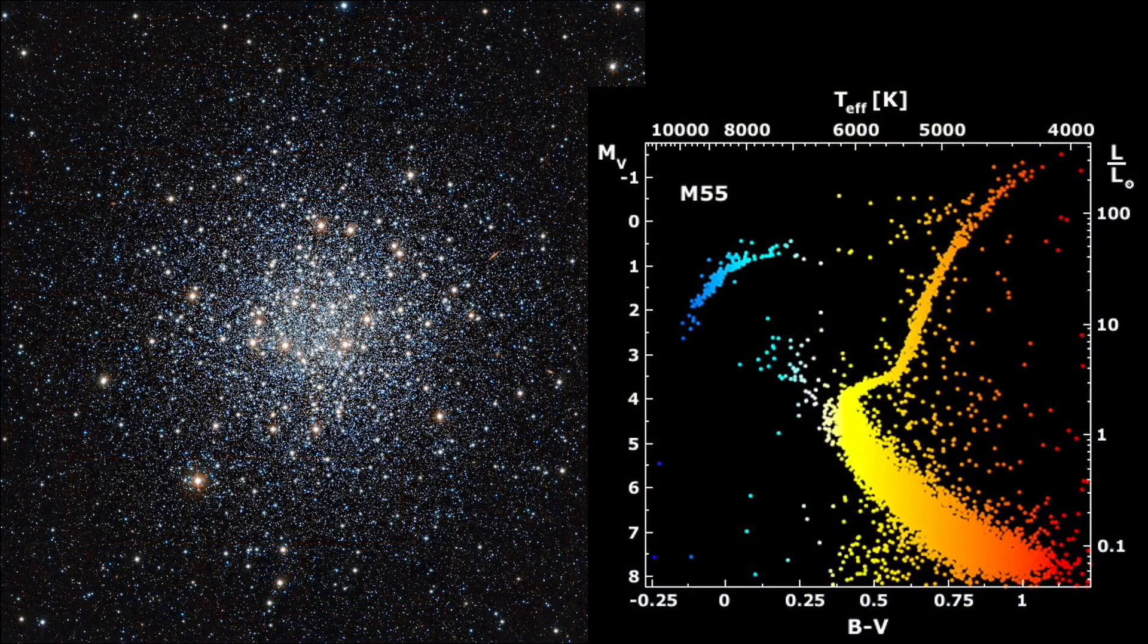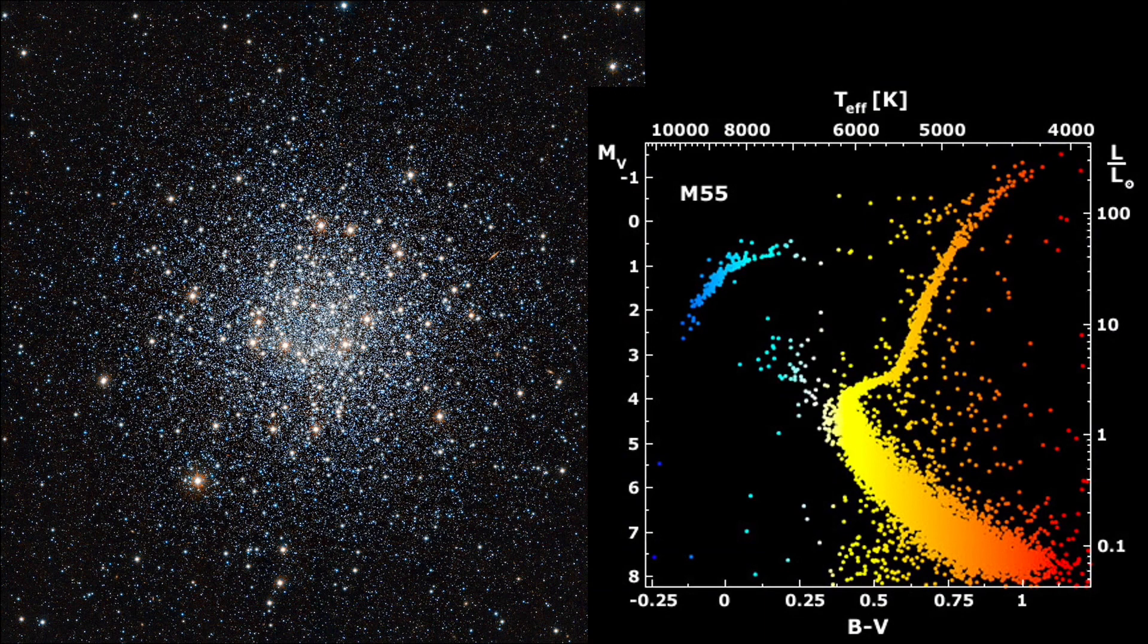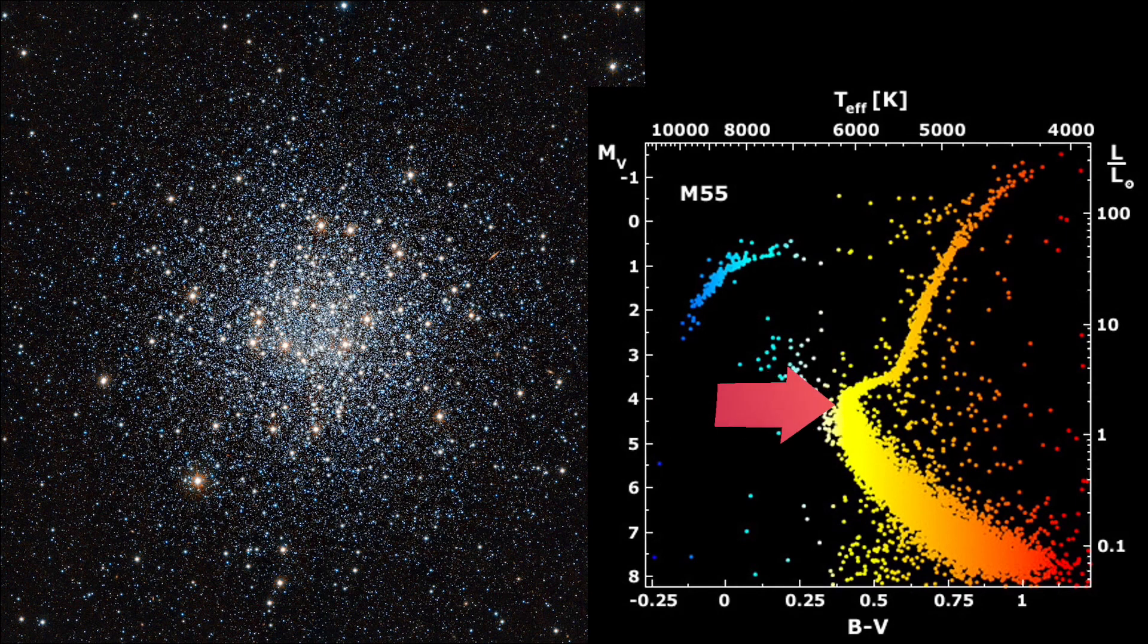So in the case of star cluster M55, which we were previously looking at, whose stars are plotted on the HR diagram shown, the main sequence turnoff point occurs right around here. But without much more information on this particular HR diagram, like the spectral type and each spectral type's main sequence life expectancy, how can we tell the age of M55?